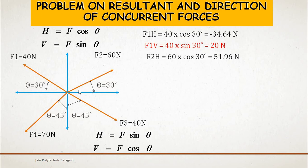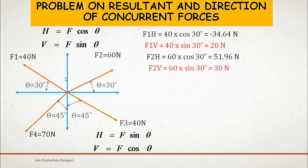For F2, the horizontal component is F cos θ = 60 cos 30° = +51.96 N, positive because it acts toward the right. The vertical component is 60 sin 30° = 30 N, again positive because the vertical component acts in the upward direction.